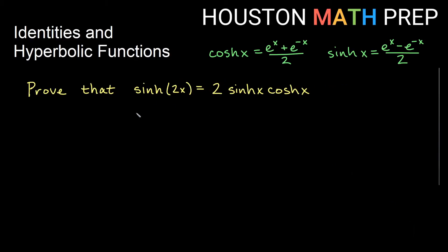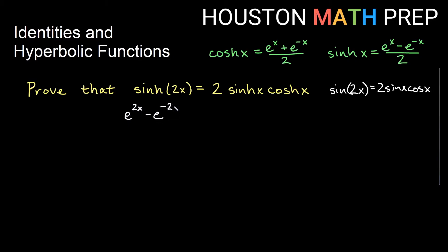Now a different kind of working with identities — we might want to prove an identity with hyperbolic functions. Here we're going to prove that sinh(2x) equals 2·sinh(x)·cosh(x). This is a double angle formula, very similar to the circular functions where sin(2x) = 2·sin(x)·cos(x). sinh(2x) means we take the sinh exponential definition and put 2x in wherever x is. So sinh(2x) = (e^(2x) - e^(-2x))/2.